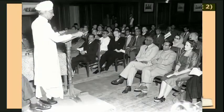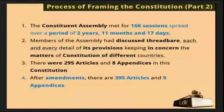The Constituent Assembly held a total of 166 sessions. It took 2 years, 11 months, and 17 days to complete the Constitution. The members of the Assembly thoroughly discussed each and every detail and provision, keeping in consideration the constitutions of different countries.